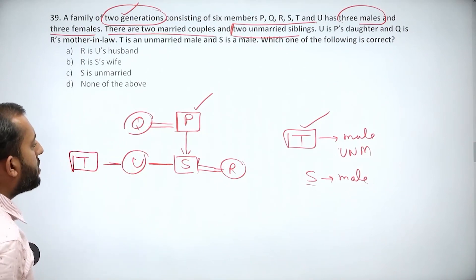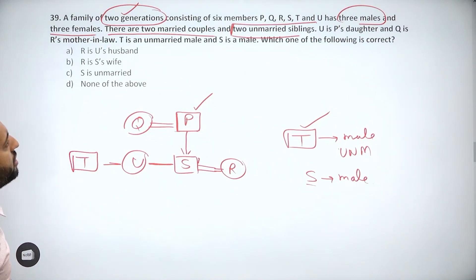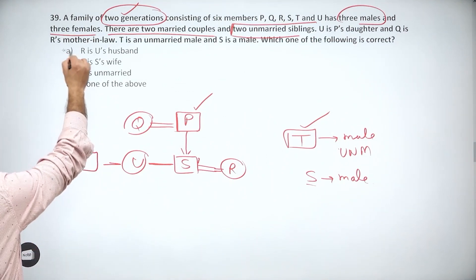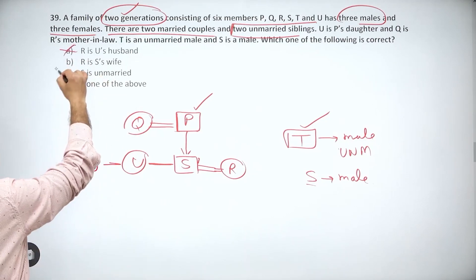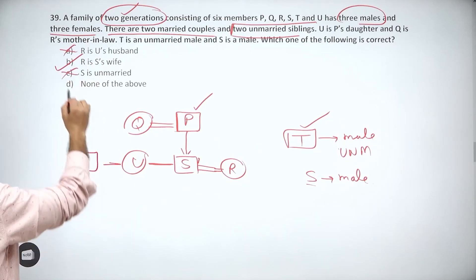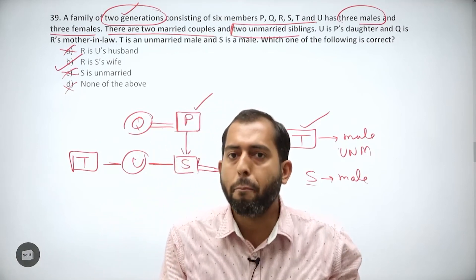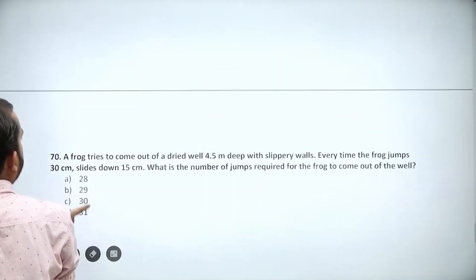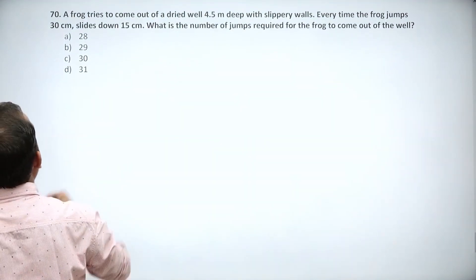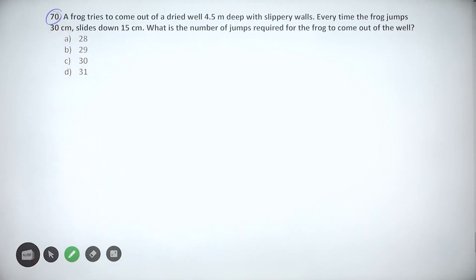Now for the question: which of the following is correct? 'R is U's husband' - no. 'R is S's wife' - yes. 'S is unmarried' - no. The answer is option B.